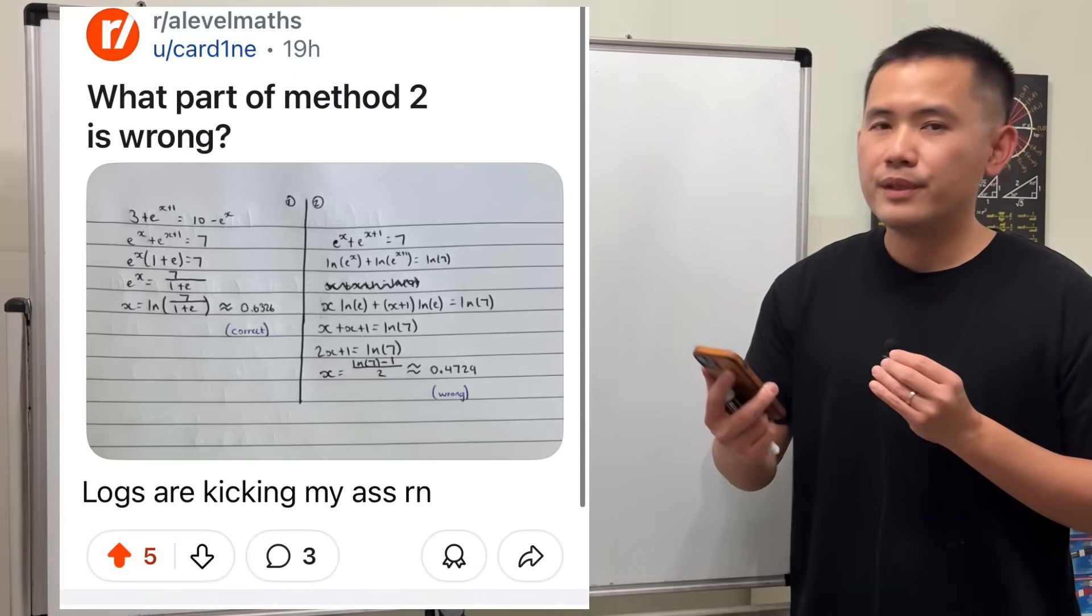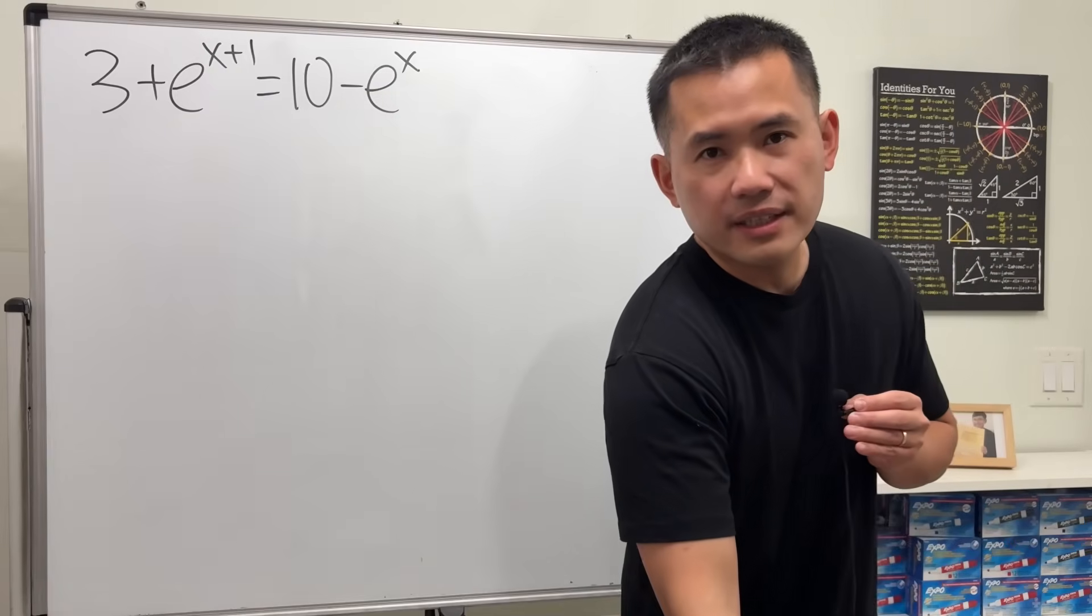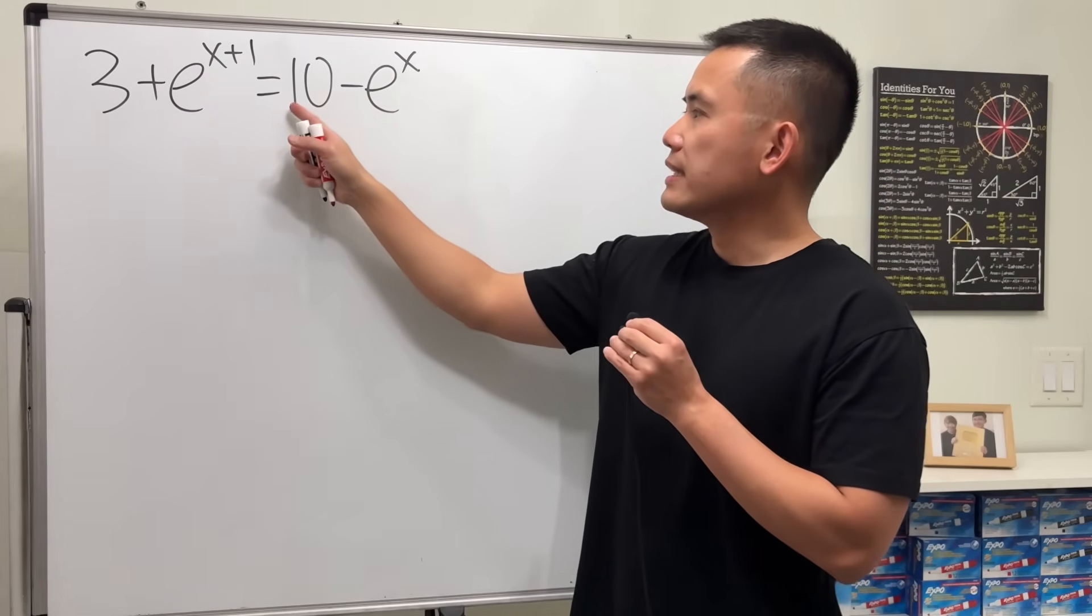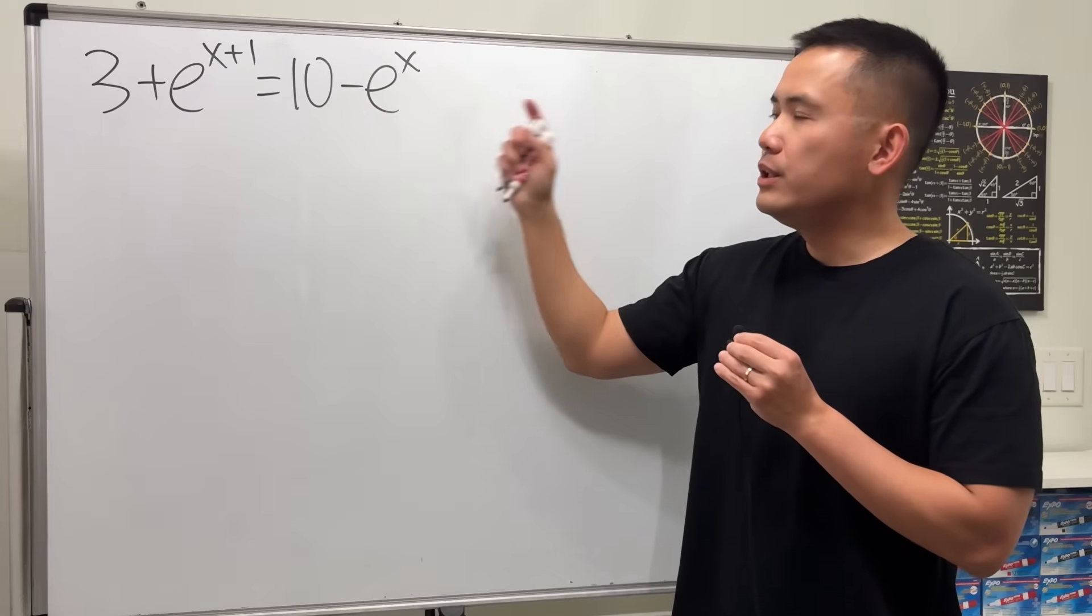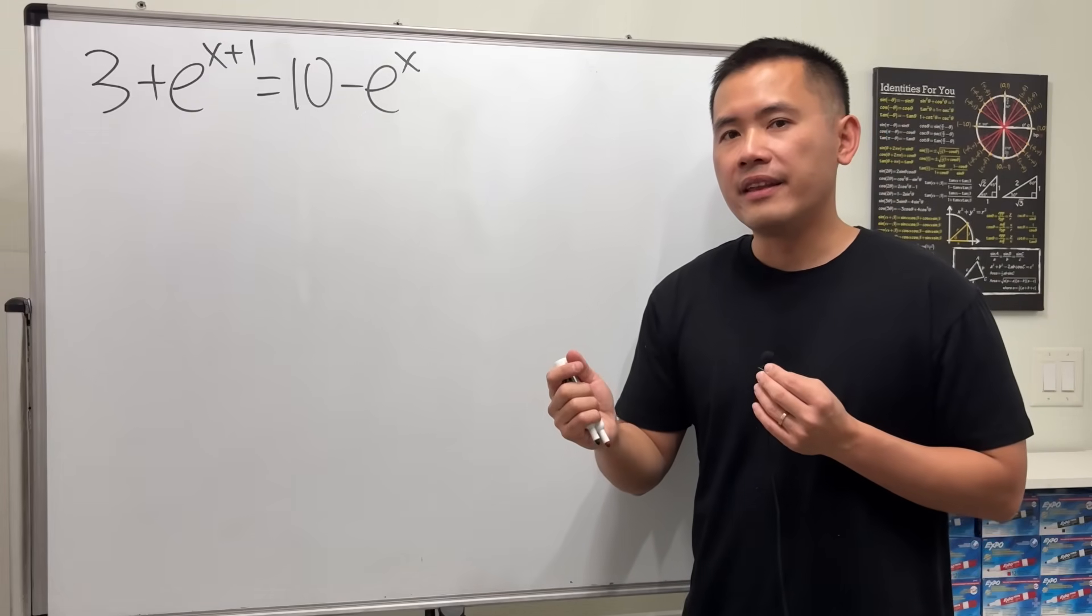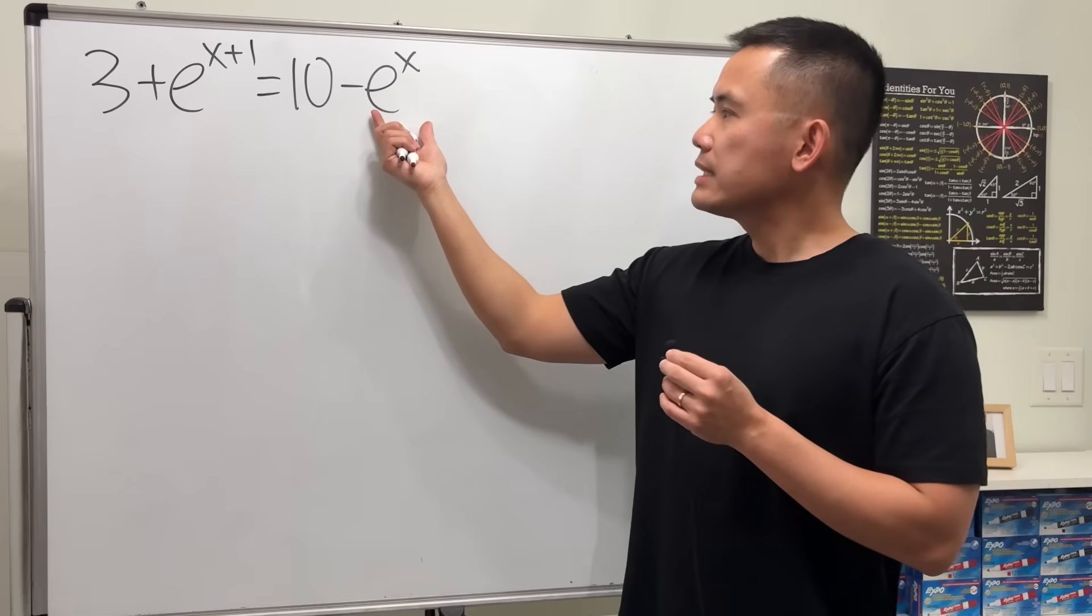What part of method 2 is wrong? Okay, let's take a look. So here's the original equation: 3 + e^(x+1) = 10 - e^x. First, we can put all the terms with x on one side and then the numbers on the other.